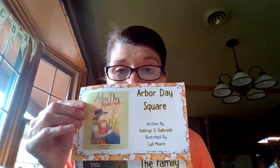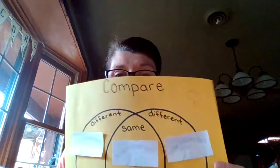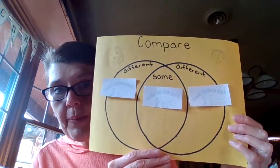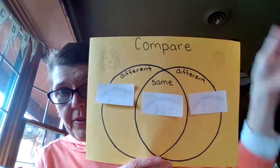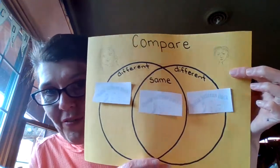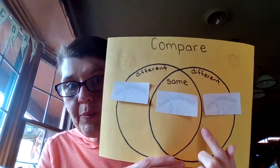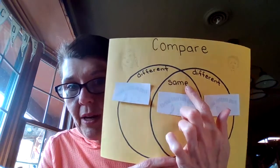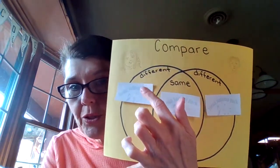I want you to use these two books. I want you to think about Arbor Day Square and Family Tree. I want you to think about how those books are the same, and specifically I want you to think about the characters. I want you to think about how Katie and the boy are alike and how Katie and the boy are different. I'm asking you to compare, and you can do that using a Venn diagram, a comparison chart. I just took a piece of paper, drew two circles, and wrote compare at the top. They show how two things are the same where the circles overlap and how they are different.